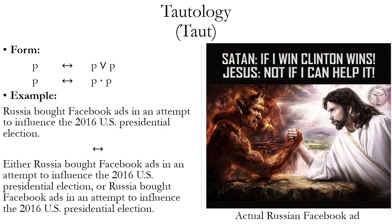There's a second version of tautology that works the same way, but instead of using the wedge, it uses the dot. Logically, the reason this makes sense is because if you say either P is true or P is true, that's the same basic meaning as saying that P is true. And likewise, if you say both P is true and P is true, that's a redundancy — it's the same as just asserting P. Here's a natural language example: Russia bought Facebook ads in an attempt to influence the 2016 U.S. presidential election. That's logically equivalent to: either Russia bought Facebook ads in an attempt to influence the election, or Russia bought Facebook ads in an attempt to influence the election.